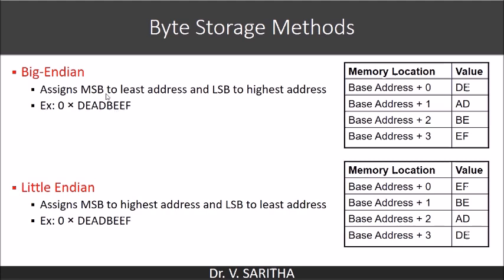In big endian, the MSB is assigned to the least address and the LSB is assigned to the highest address. If you consider a hexadecimal value DEADBEEF, then at base address plus 0, the MSB value DE is stored. Since a hexadecimal digit takes 4 bits, DE takes 8 bits, so DE will be stored at the base address.